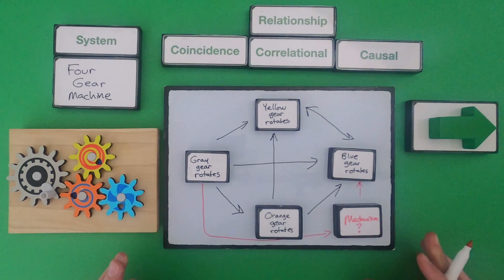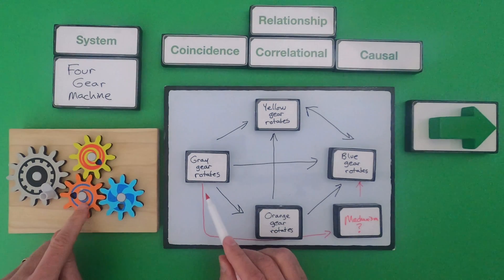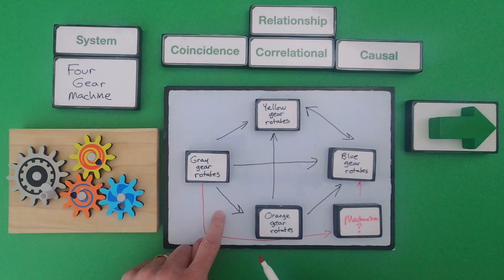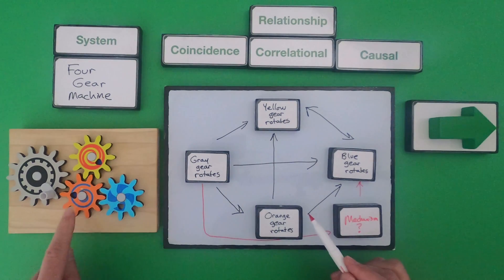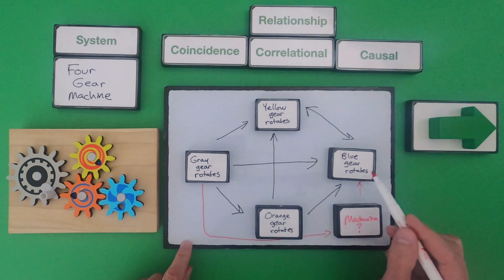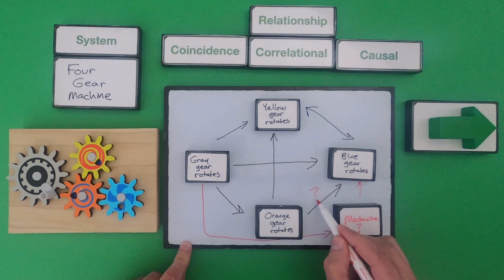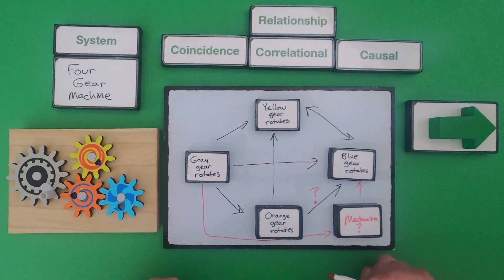And so I would say the gray gear is causing the mystery mechanism to do something that might be causing the blue gear to rotate. Are any of my other relationships kind of in danger? I would say, well at this point I know that the gray gear causes the orange gear to move. So I think this is okay. But is the orange gear really causing the blue gear to move? I think I could put a question mark there. I'm not sure.